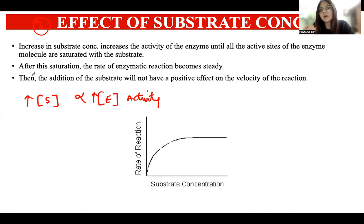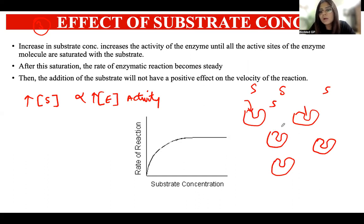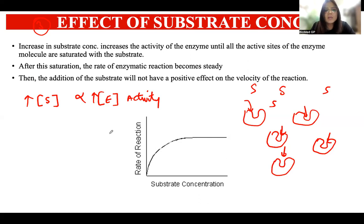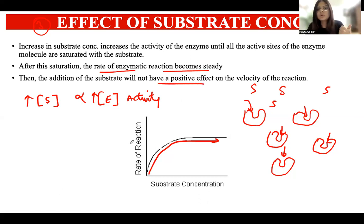However, this increase can only continue to a certain extent. There are a limited number of enzyme molecules — for example, five enzyme molecules with their active sites. As substrate concentration increases, more enzyme-substrate complexes form, but once all active sites are saturated — covered with substrates — there will be no further increase in rate. After this saturation point, even if substrate concentration increases further, there is no positive effect on the velocity of the reaction.